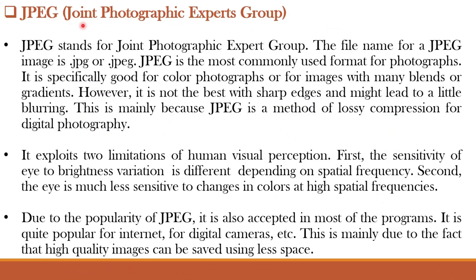Starting with JPEG — it stands for Joint Photographic Experts Group. The file extension is .jpg or .jpeg. It is one of the most commonly used formats for photographs and is specifically good for color photographs or images with many blends or gradients. However, it is not best for sharp images and might lead to slight blurring, because JPEG is mainly a lossy compression format for digital photographs. JPEG exploits two limitations of human visual perception: first, the sensitivity of our eye to brightness variation differs depending on spatial frequency; and second, our eye is much less sensitive to changes in colors at high spatial frequencies. JPEG is very popular and accepted for most programs, and it is quite popular for internet image transmission.